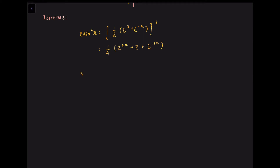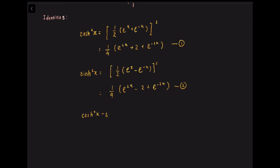For sinh²(x), it equals (1/2 · (e^x minus e^(−x)))², which simplifies to (1/4)(e^(2x) minus 2 plus e^(−2x)). Hence, subtracting equation 2 from equation 1, we obtain cosh²(x) minus sinh²(x) equals 1.